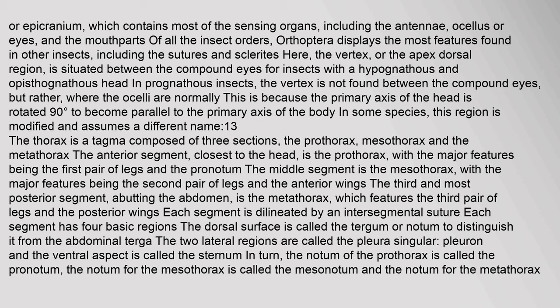The thorax is a tagma composed of three sections: the prothorax, mesothorax, and metathorax. The anterior segment, closest to the head, is the prothorax, with the major features being the first pair of legs and the pronotum. The middle segment is the mesothorax, with the major features being the second pair of legs and the anterior wings. The third and most posterior segment, abutting the abdomen, is the metathorax, which features the third pair of legs and the posterior wings. Each segment is delineated by an intersegmental suture.